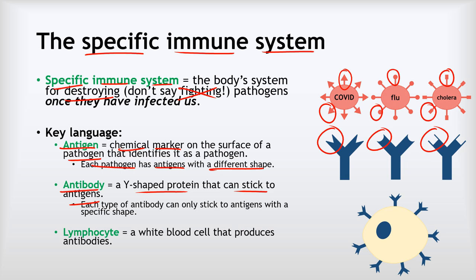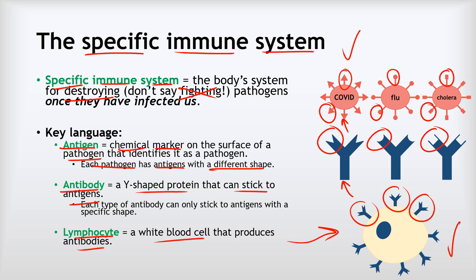Finally, we have the lymphocyte. A lymphocyte is a type of white blood cell that produces antibodies. You can see all the antibodies stuck to it. This specific lymphocyte produces antibodies that would stick to the antigens on COVID, but it wouldn't work against flu or cholera because its antibodies are the wrong shape for their antigens.